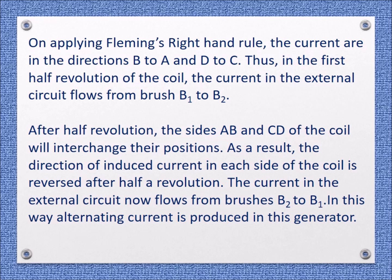After half a revolution, the sides AB and CD of the coil interchange their positions. As a result, the direction of induced current in each side of the coil is reversed after half a revolution. The current in the external circuit now flows from brush B2 to B1. In this way, alternating current is produced in this generator.